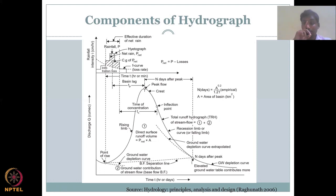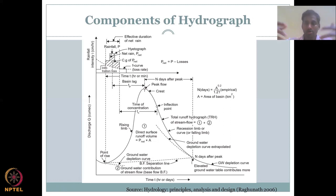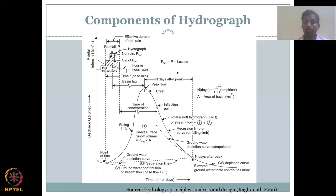Zero pre-rainfall discharge is the case for seasonal rivers — rivers that do not flow without rainfall. They have no groundwater base flow, so only when rainfall happens does all the water in the basin come together and flow into the river. The example shown on screen is a river with a base flow component, so it is most probably a perennial river.